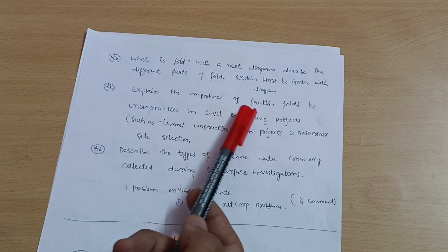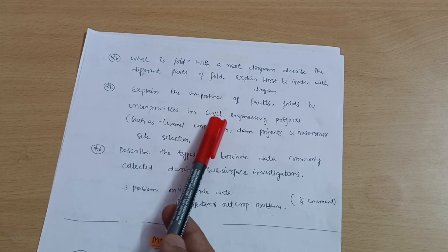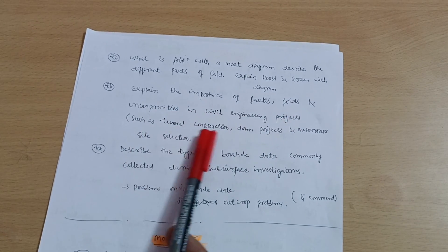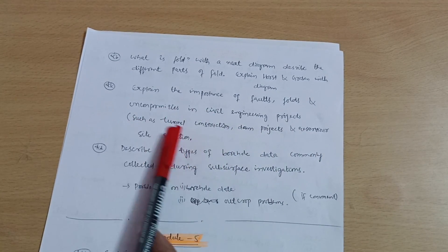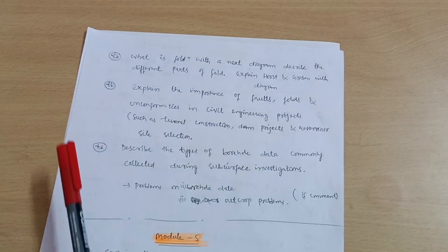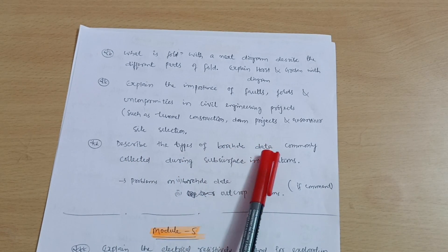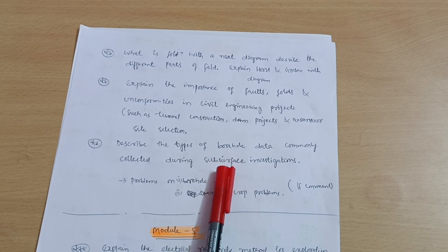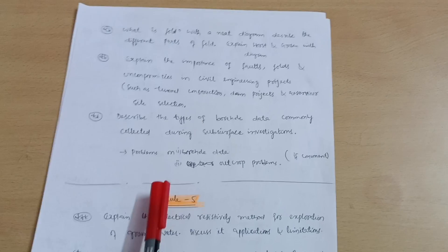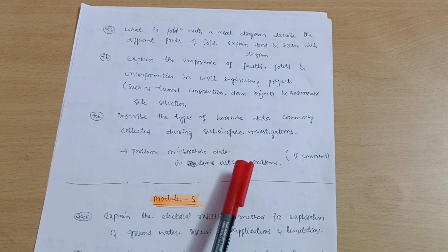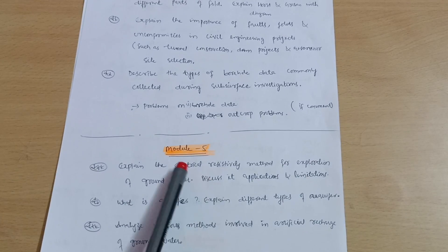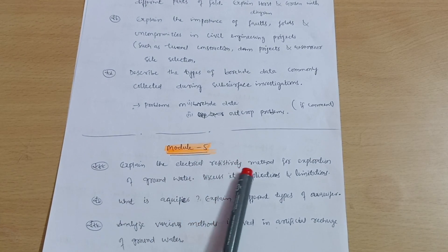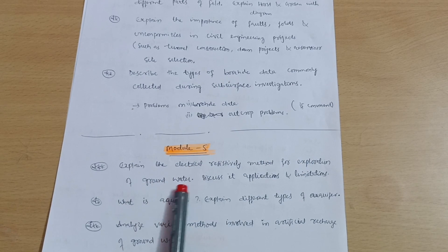Next is explain the importance of faults, folds, and unconformities in civil engineering projects such as tunnel construction, dam projects, and reservoir site selection. You should give the importance of these particular projects. Next is describe the types of borehole data commonly collected during subsurface investigations. There are some problems on borehole data and outcrop problems. If you are convenient you can go through the problems. If you want to pass only, you can neglect the problematic part.